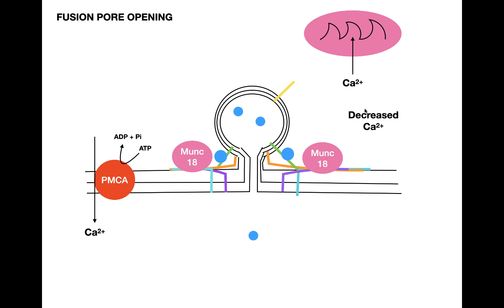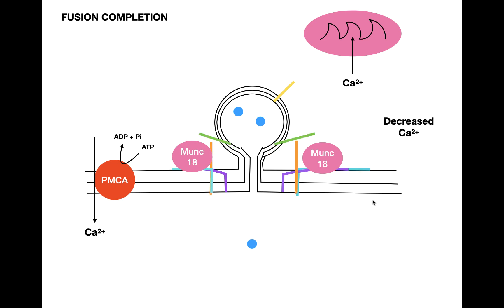As calcium levels decrease in the cytosol, this causes calcium to dissociate from synaptotagmin. When calcium dissociates from synaptotagmin, synaptotagmin dissociates from the complex and synaptobrevin dissociates from the vesicle, remaining attached to the complex.